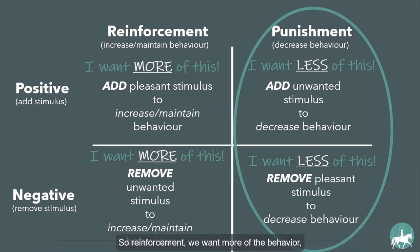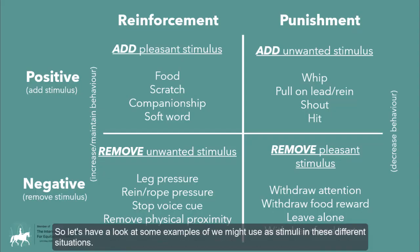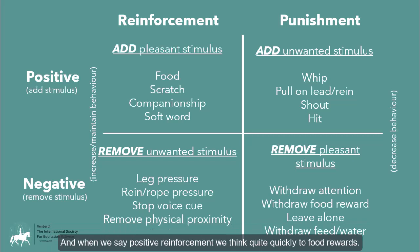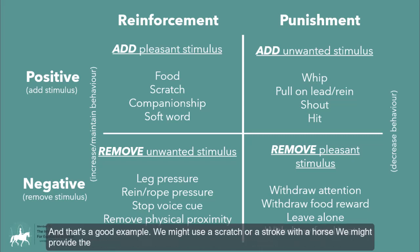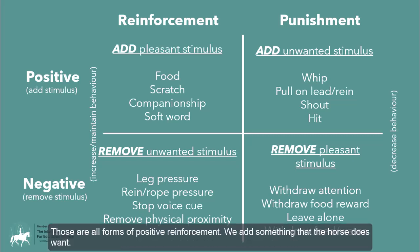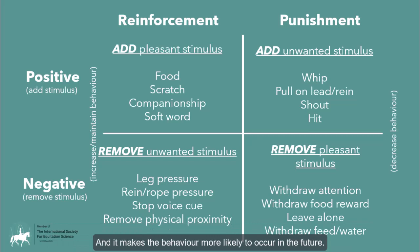So reinforcement means we want more of the behavior, and punishment means we want less. Let's look at some examples of stimuli in these different situations, starting with positive reinforcement. When we say positive reinforcement, we think quite quickly of food rewards, and that's a good example. We might also use a scratch or a stroke with the horse, provide companionship, or a soft word. We add something the horse does want, making the behavior more likely to occur in the future.